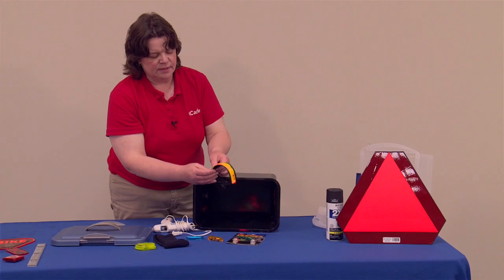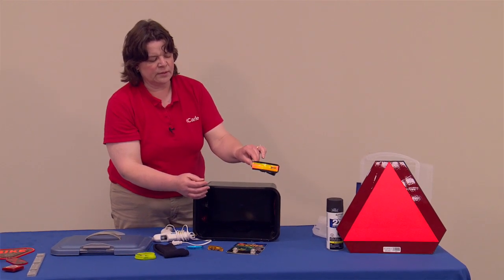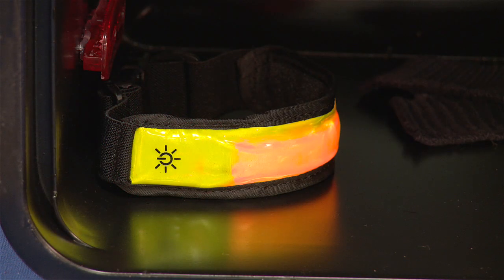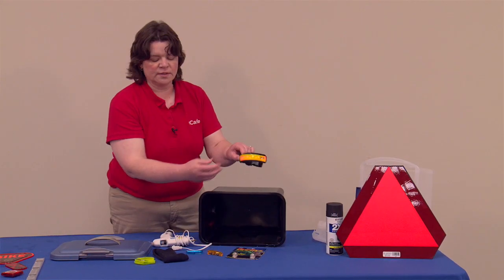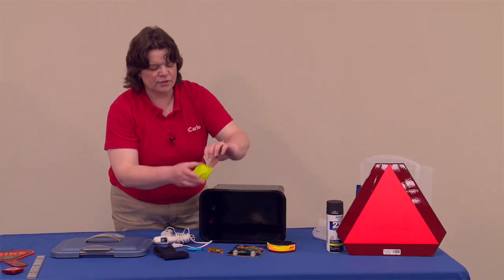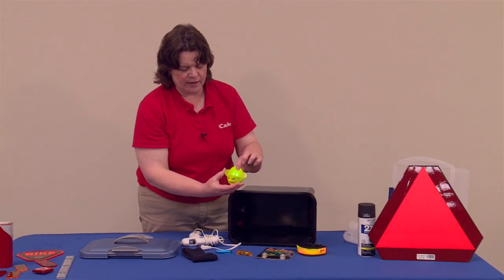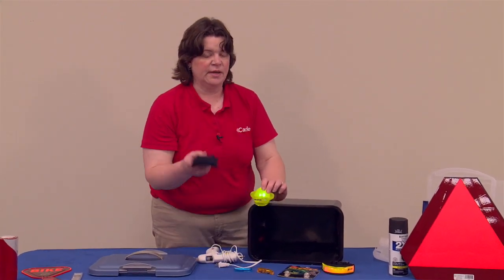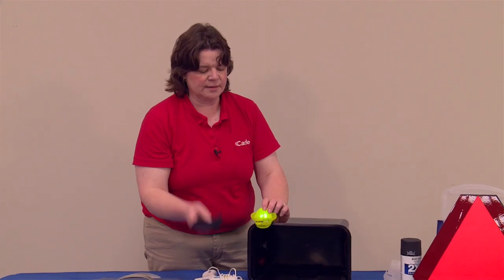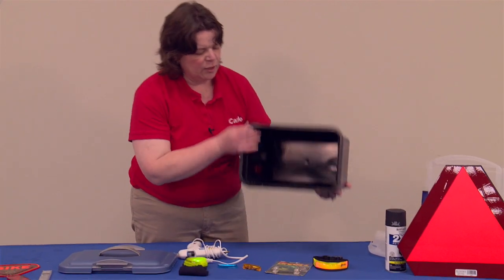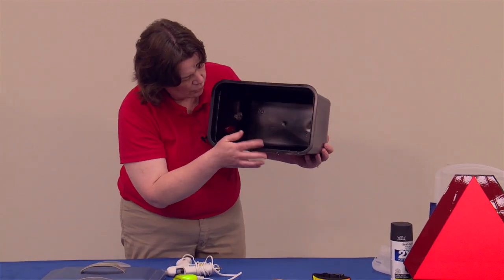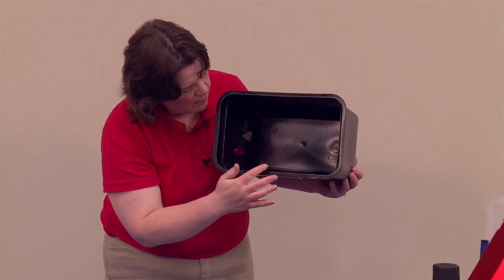You can purchase something like this that can be worn as a wristband, or in an Anabaptist community sometimes we'll use something similar on horses. I also purchased this one that you can turn on and it will flash. The final piece you'll need is a black sock or a piece of a black sock. Then you use your hot glue gun and place the items inside and glue them to the walls of the black box.